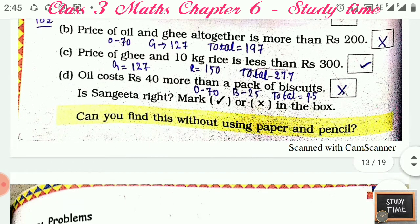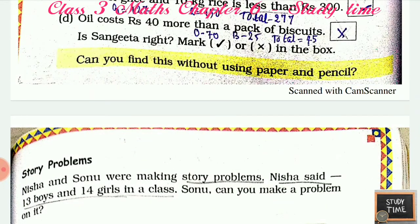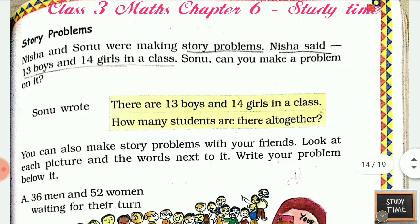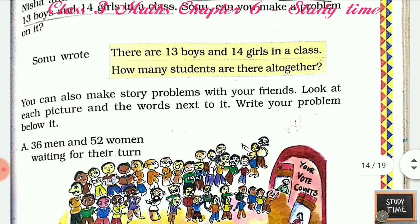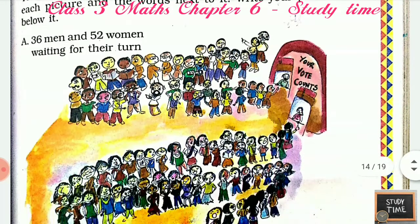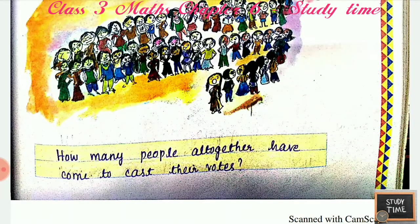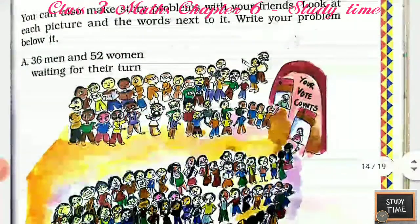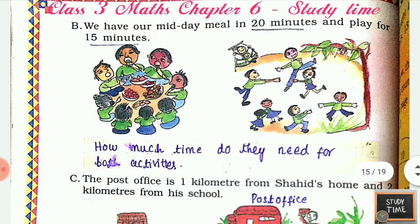Can you find this without using a pencil or paper? Check whether you can do this without any pencil or paper. Story Problems: Nisha and Sonu were making story problems. Nisha said there are 13 boys and 14 girls in a class. Sonu wrote: 'There are 13 boys and 14 girls in a class — how many students are there altogether?' Look at each picture and the words next to it and write your own problem. For example: 36 men and 52 women are waiting for their turn — how many people have come altogether to cast their votes?